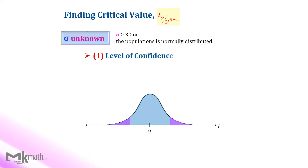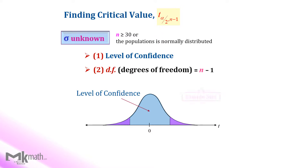Step 1: Identify the given confidence level of the question. Step 2: Find the degrees of freedom by subtracting one from the sample size, then look up the table. Please keep in mind that our table gives only positive t-scores; however, we should have both positive and negative t-critical values.